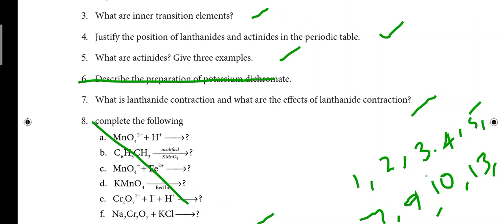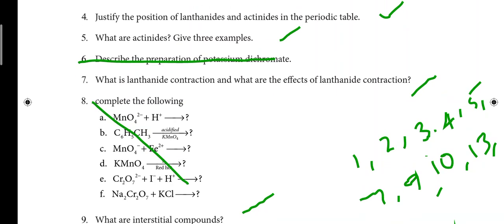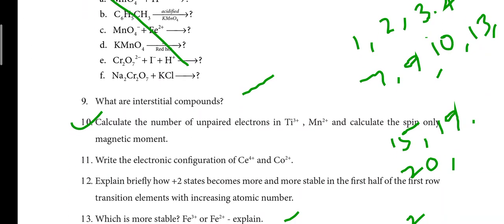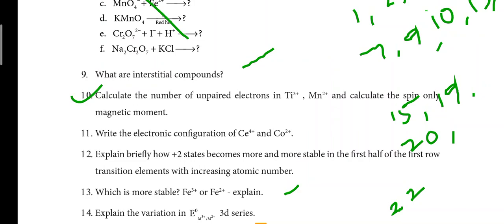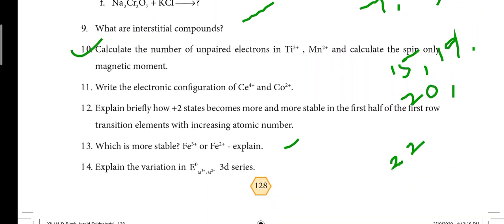The 5th question is: what are actinides, give 3 examples. The 7th question is: what is lanthanide contraction and what are the effects of lanthanide contraction — that is an important question. The 10th question is: calculate the number of unpaired electrons in Ti³⁺ and Mn²⁺, and calculate the spin-only magnetic moment.